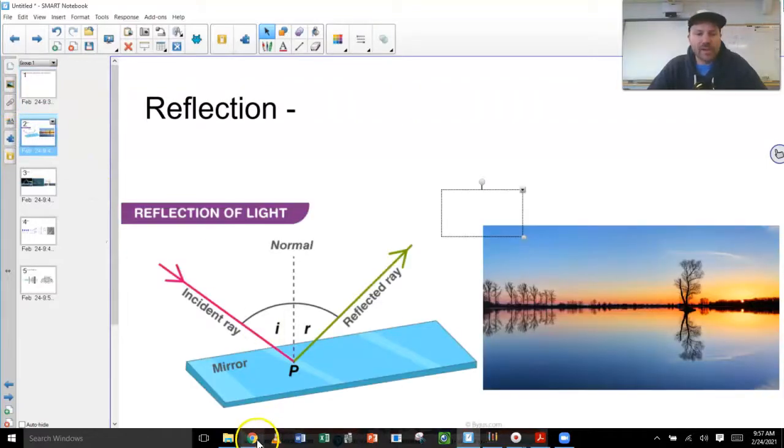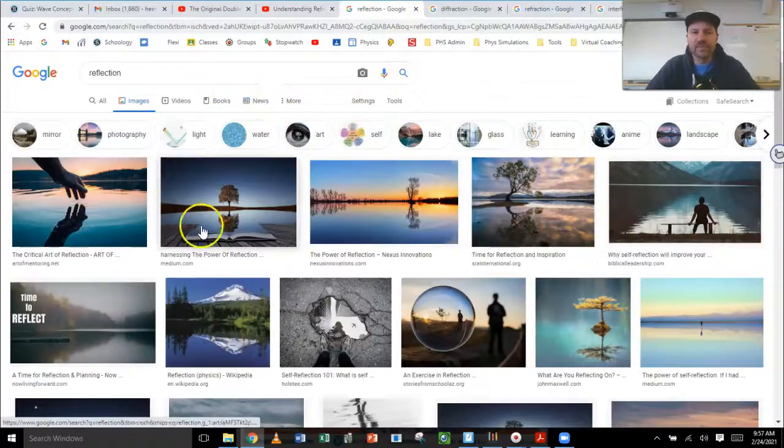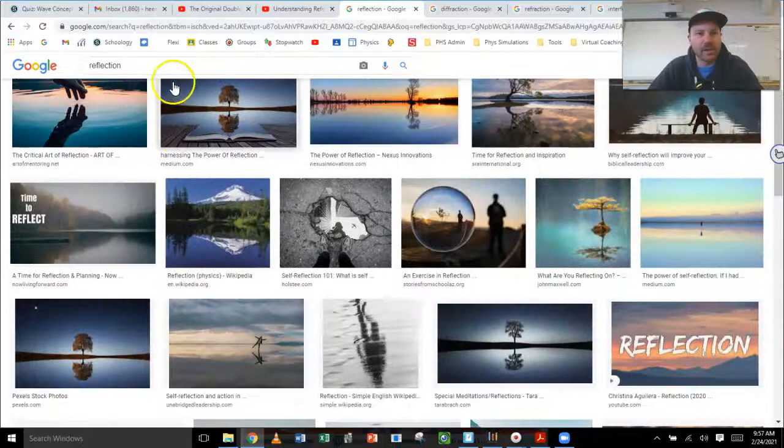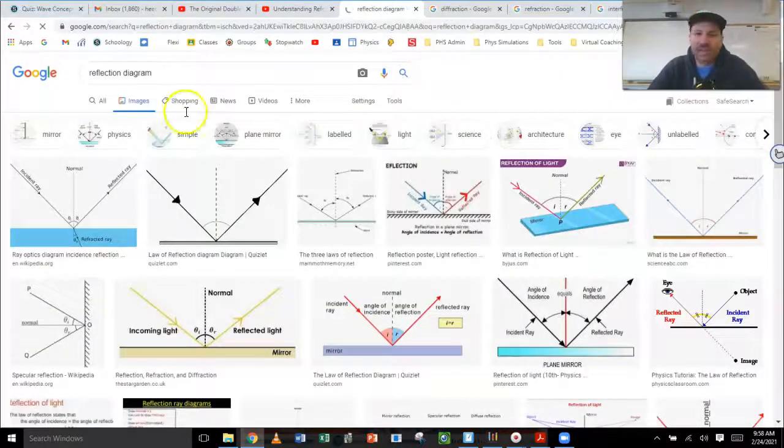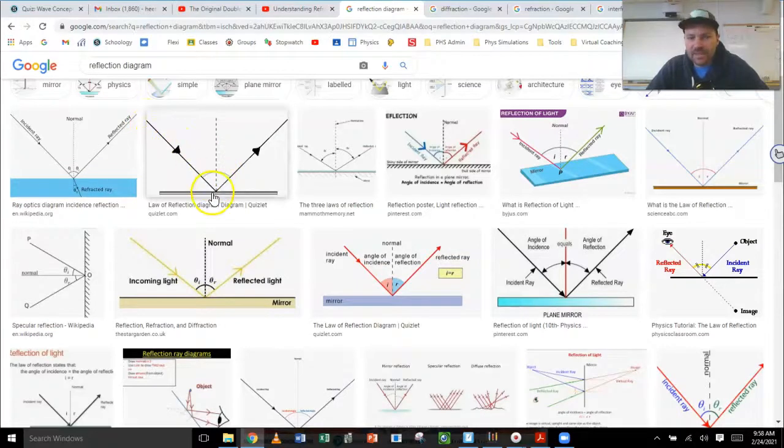Reflection, you probably already know. When I do a quick image search of reflection, you get pictures like seeing yourself in a mirror on a lake. When I do reflection diagram, it kind of shows the physics sense. Reflection, what it is, is when an incident ray hits a medium, some of it will bounce off.